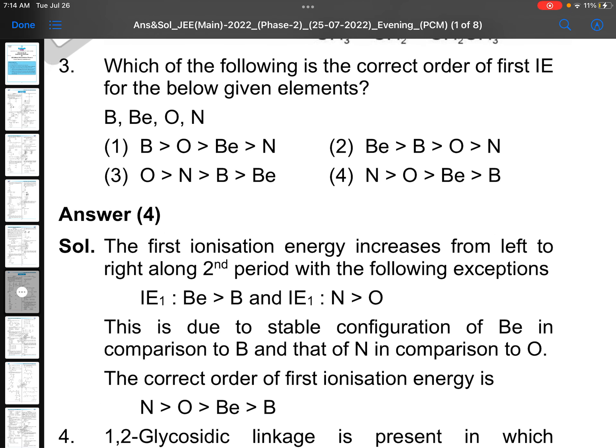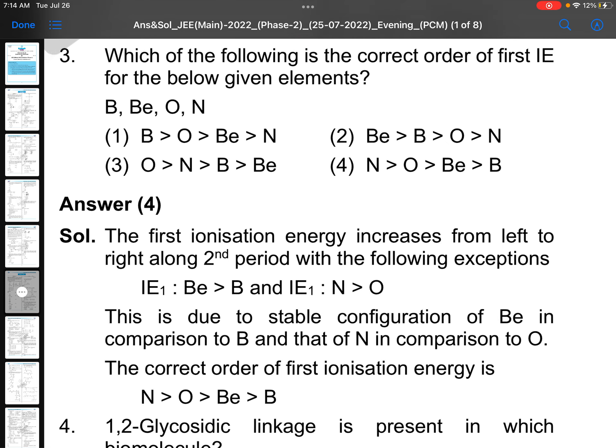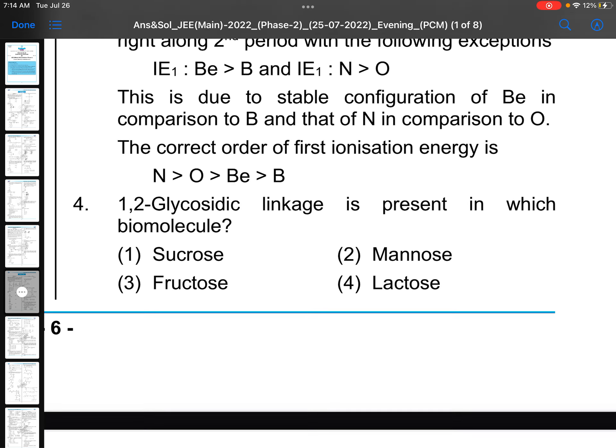Which of the following is the correct order of first ionization energy? Very simple question, basic level question. Nitrogen is more than oxygen, half-filled stability. Beryllium more than boron, full-filled stability. So right option is nitrogen, oxygen, beryllium, boron. Fourth option.